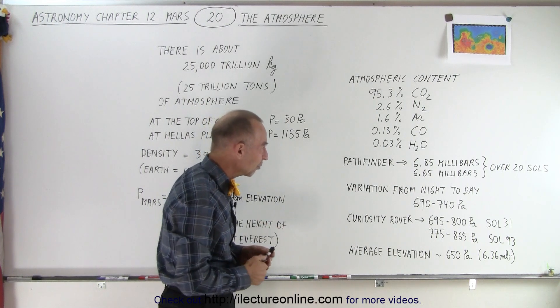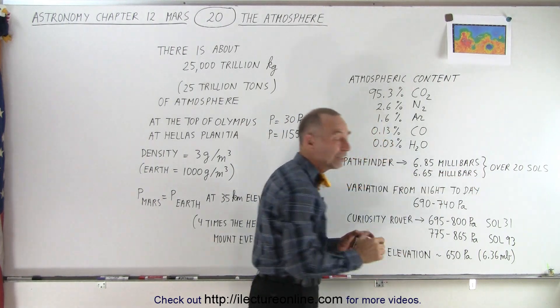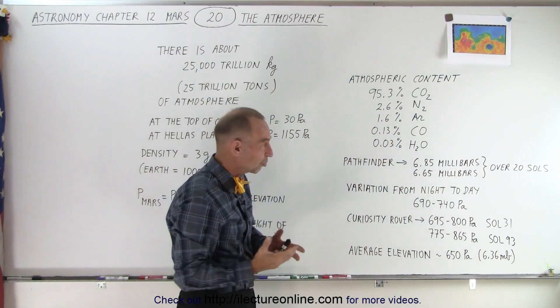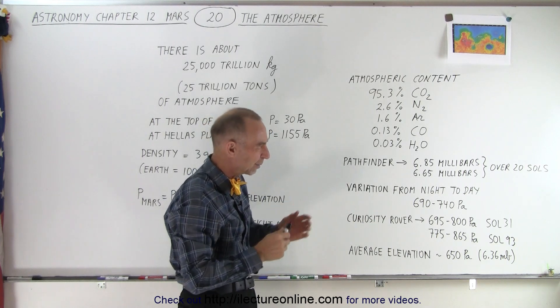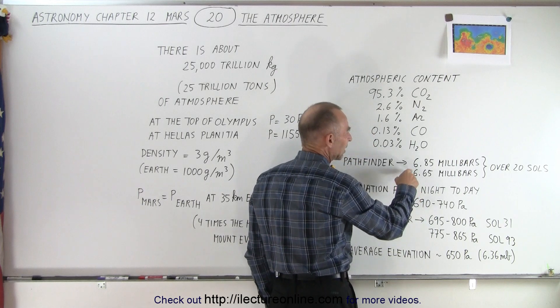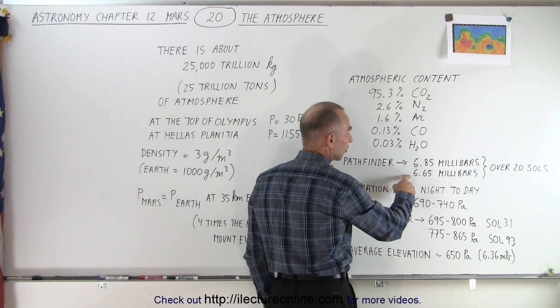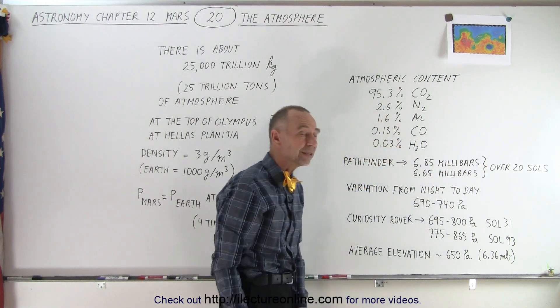But at various locations, for example, the location of the Pathfinder, we found that over a span of 20 Sols—Sols is a Martian day, which is about 25 hours, or 24, well, about 24 and a half hours, Earth hours—you can see that the atmospheric pressure can change as much from 6.65 to 6.85 just over a period of 20 days.